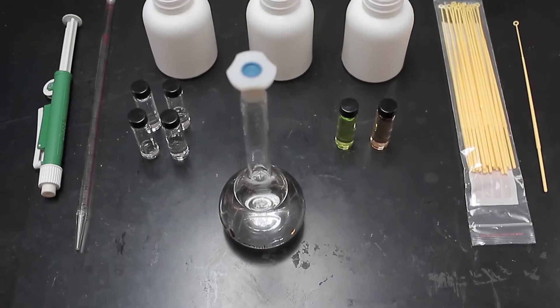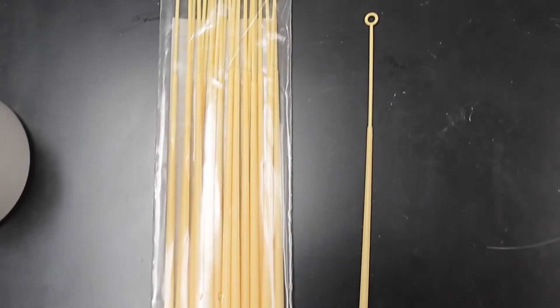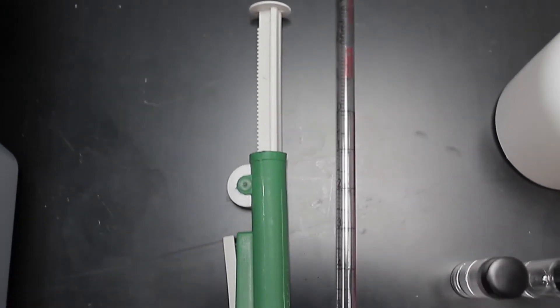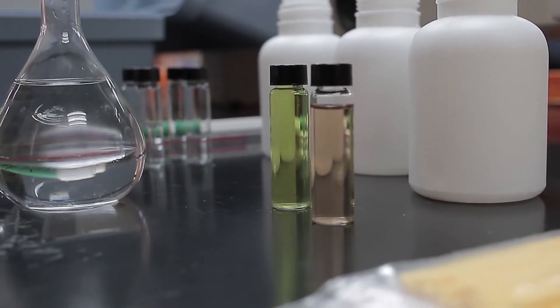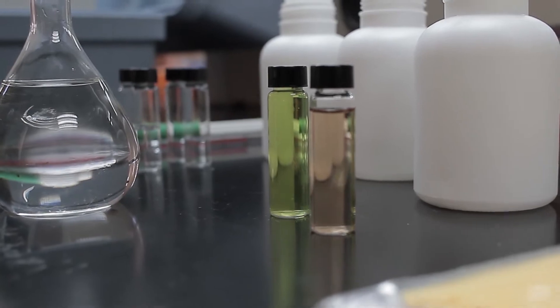For this test, you will need sterile tubes, disposable inoculation loops, an incubator, a pipette, laurel tryptoids broth, brilliant green bile broth, and EC medium broth.